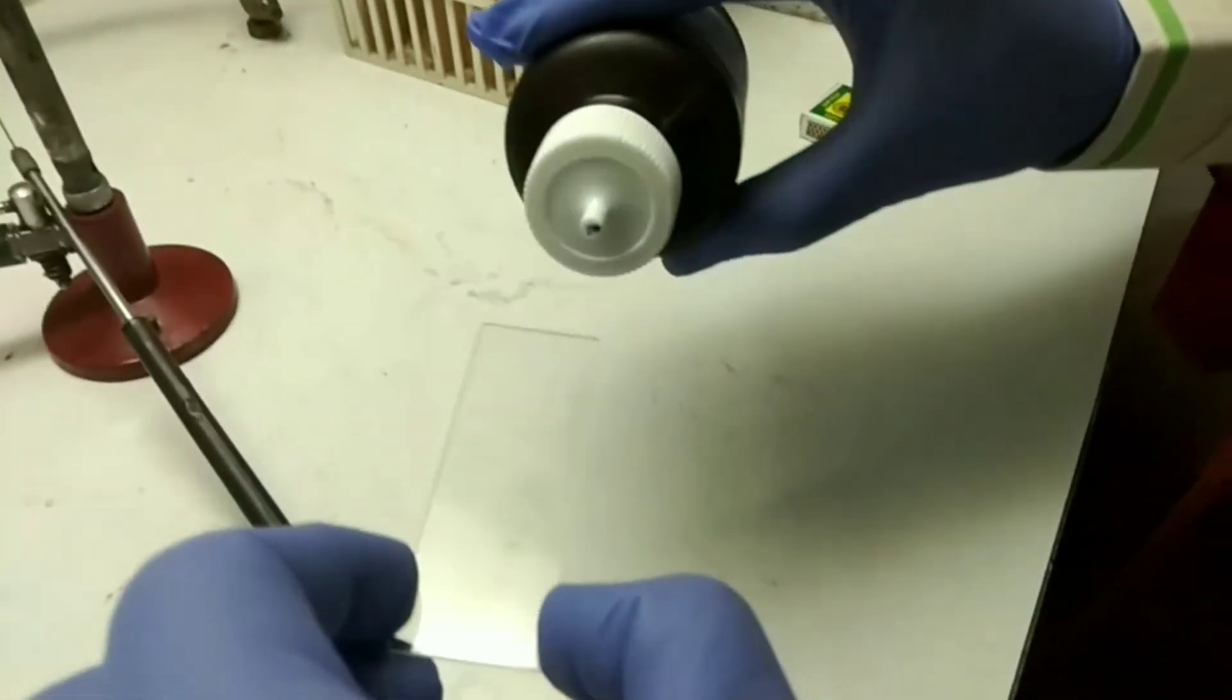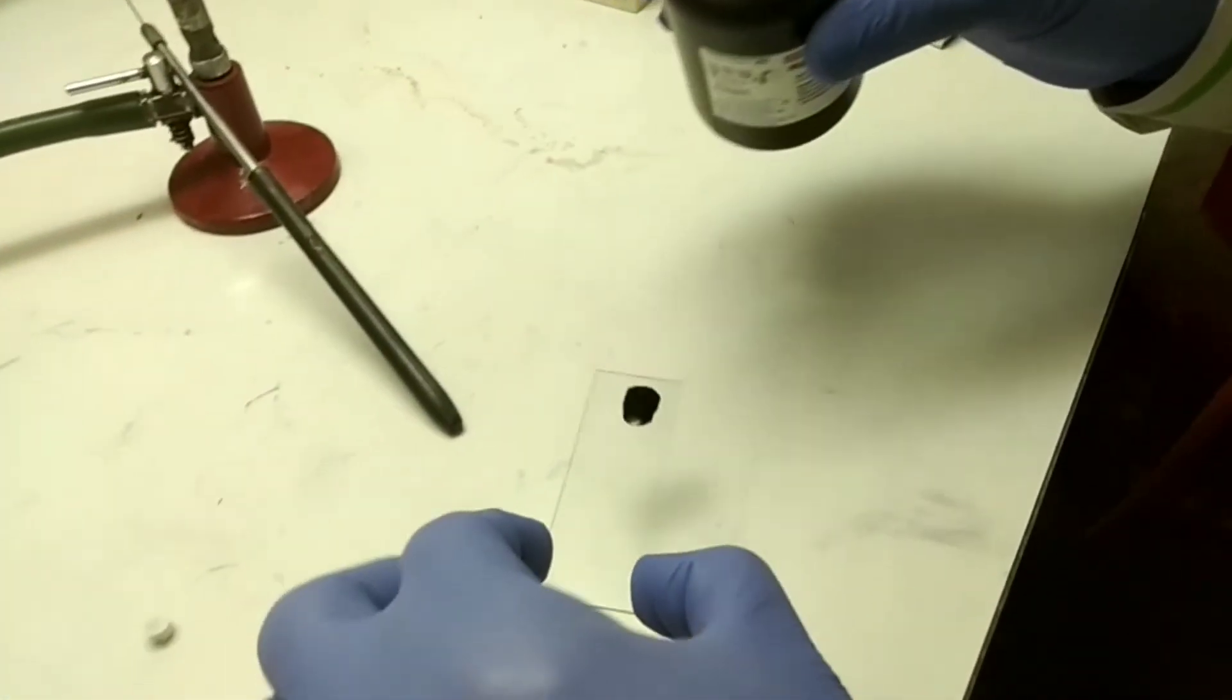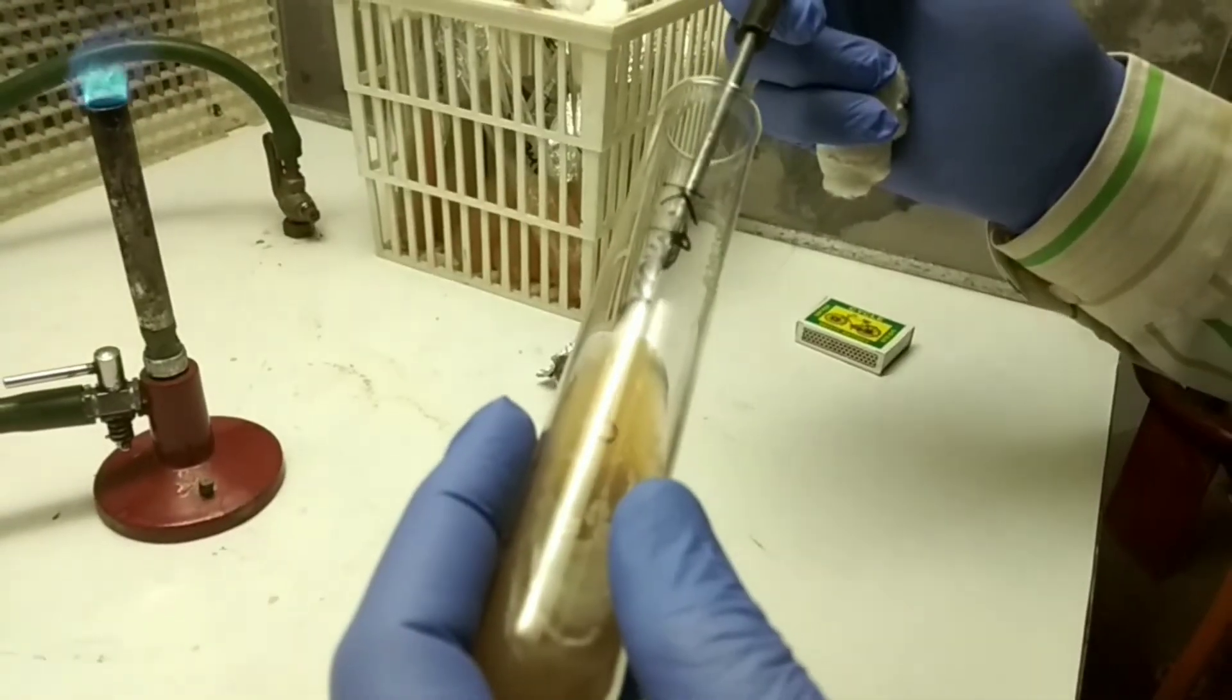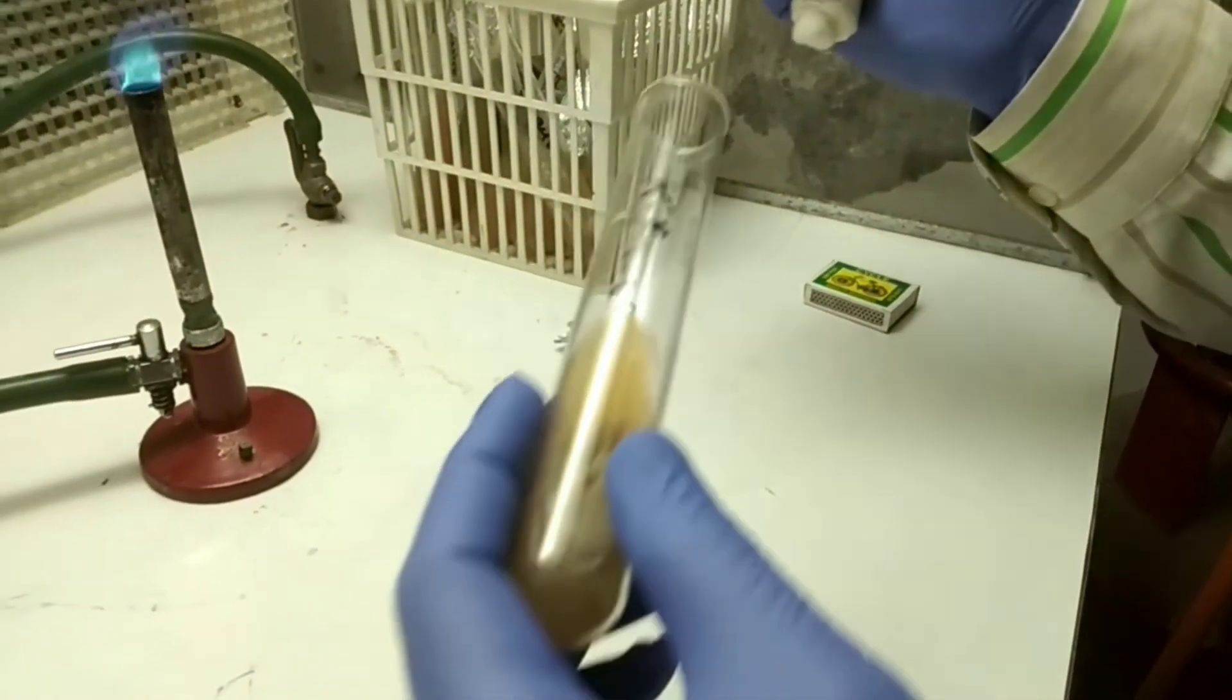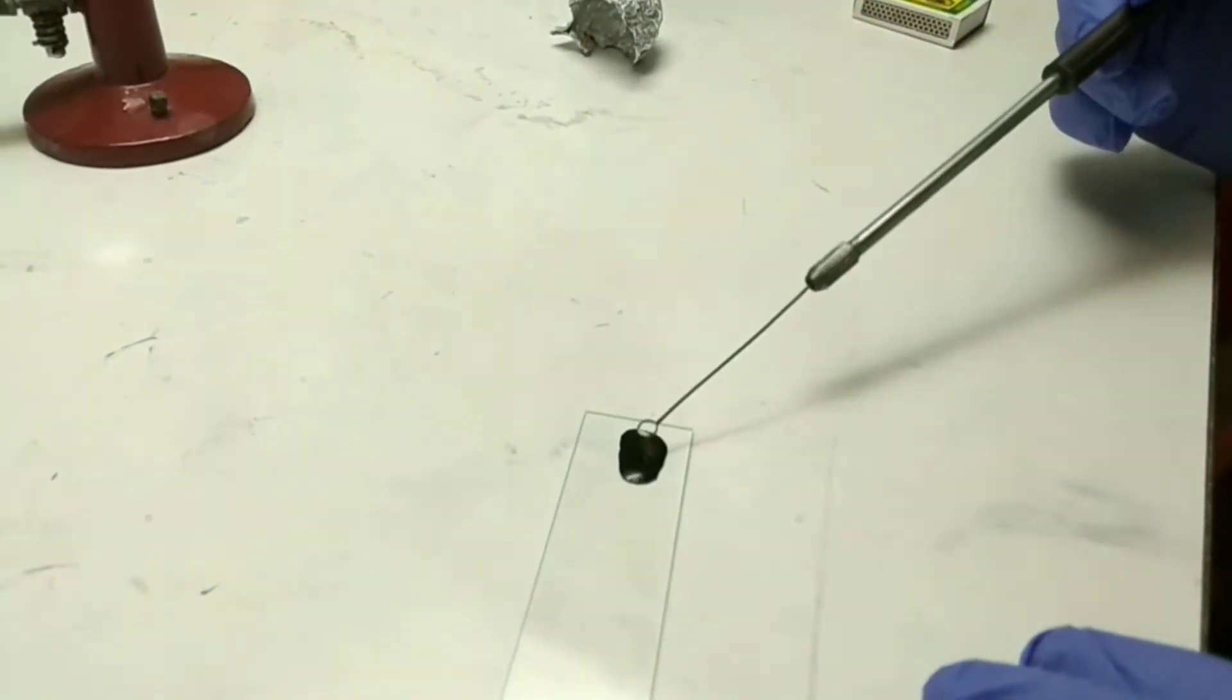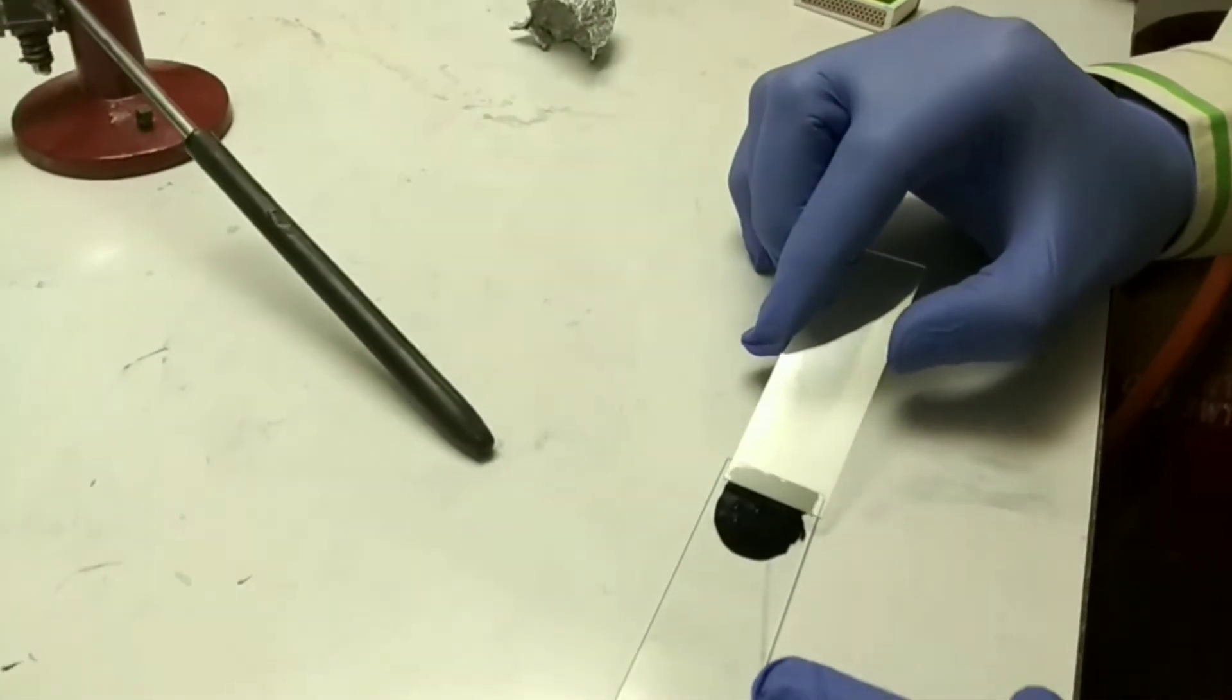Now the procedure: firstly we have to take a drop of nigrosin on one side of a slide, and then we have to sterilize our loop and take the culture of Klebsiella pneumoniae with the loop. After that we have to mix the culture of Klebsiella pneumoniae with the nigrosin droplet.